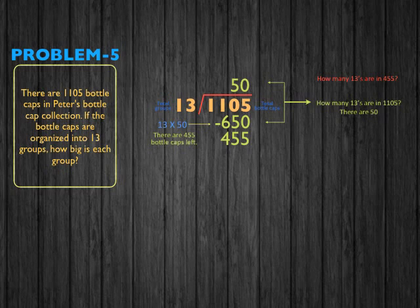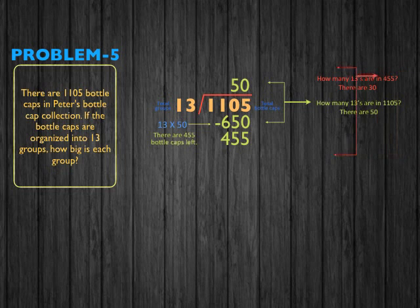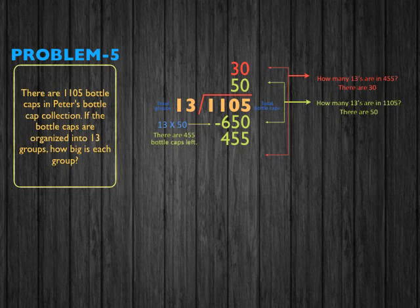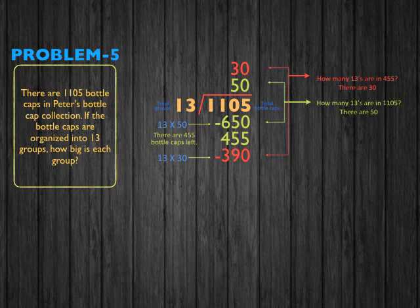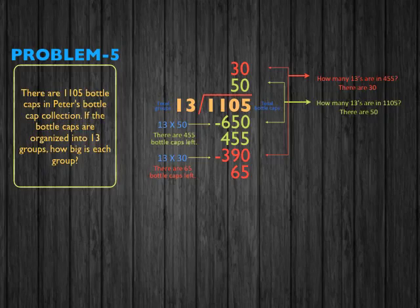Next, we ask how many 13s are in 455. The answer is 30 — that's our second partial quotient. 13 times 30 equals 390. We subtract 390 from 455, and the result is 65. That is the amount of bottle caps left.